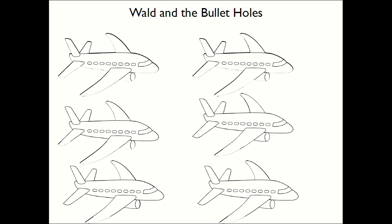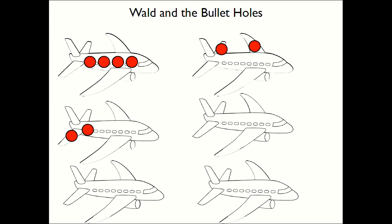I drew some airplanes here — these don't really look like the bombers, but that's okay. Here are some airplanes, and I drew some bullet holes. There's one, another one, another one, another one. So these are just some bullet holes I made up on these planes, and these are the planes they get to observe. They brought in Wald to ask where they should be putting more armor. The obvious thing to do is look at where all the planes are sustaining heavy damage and armor those regions more.